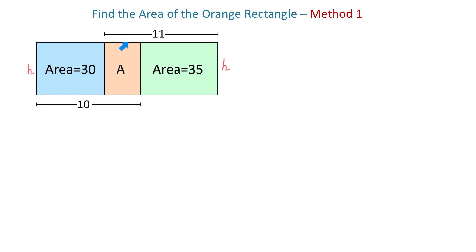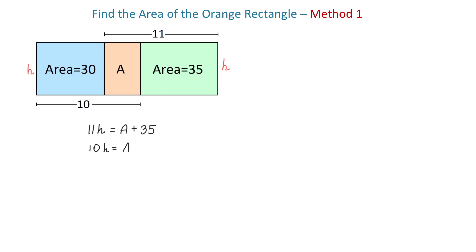If we multiply 11 by H we get the areas of the orange and green rectangles together, so we can write: 11 × H = A + 35. And if we multiply 10 by H we get the areas of the orange and blue rectangles together: 10 × H = A + 30.